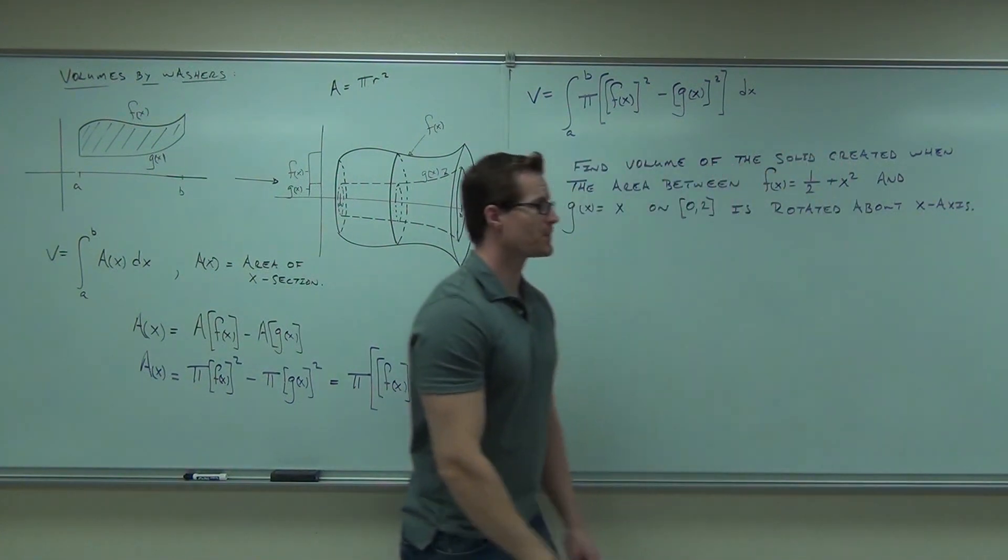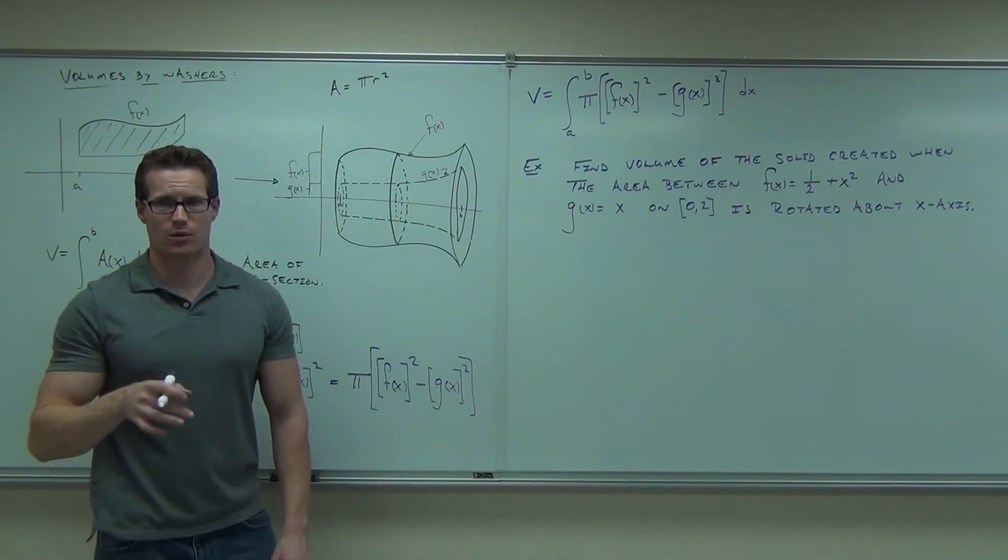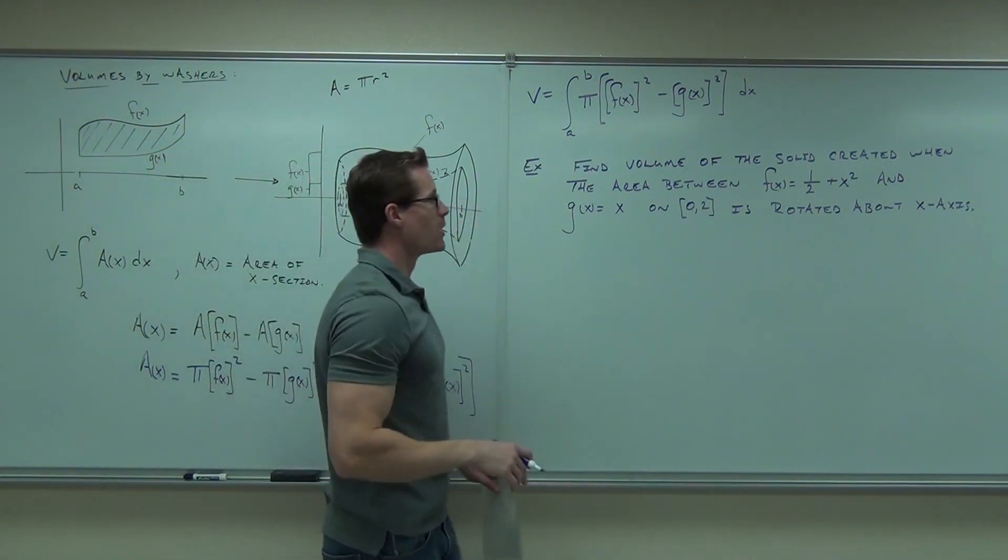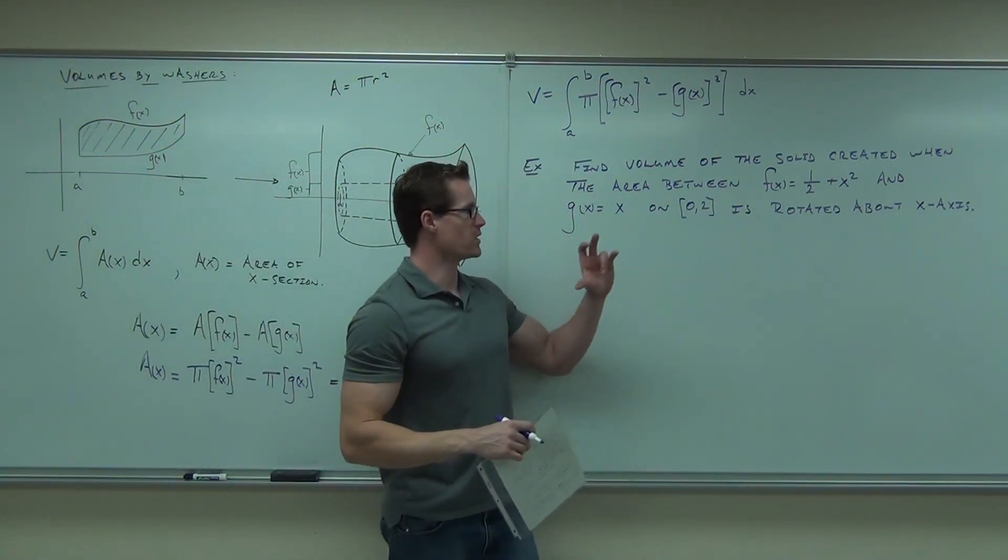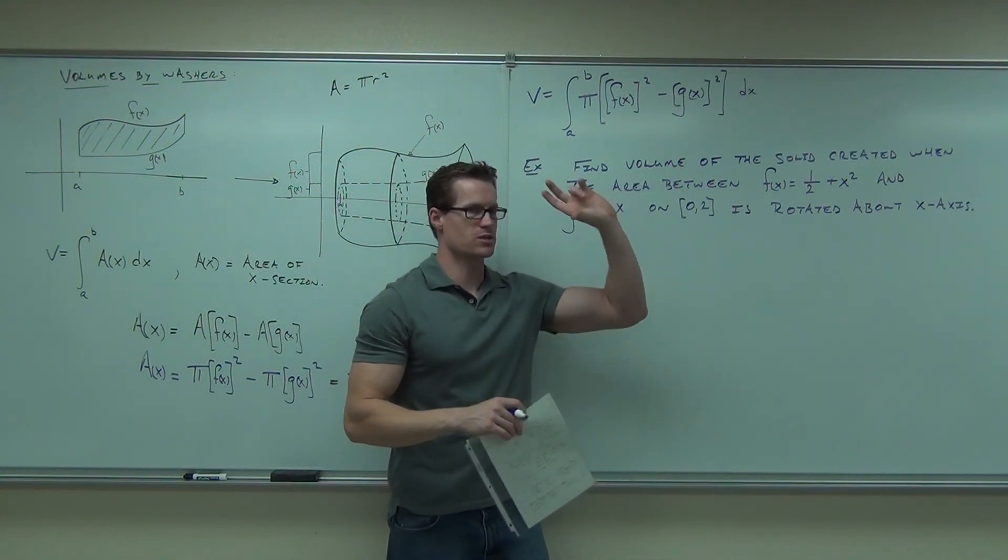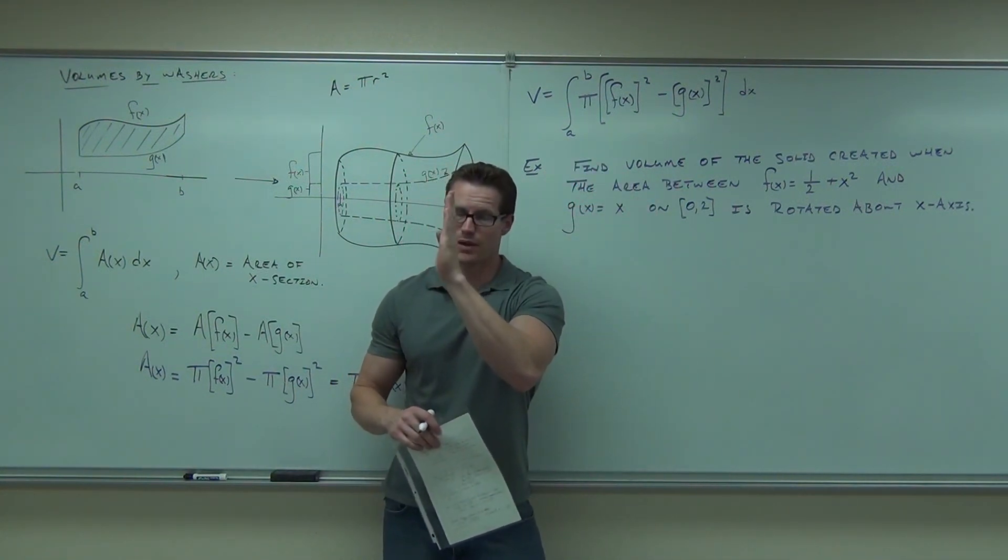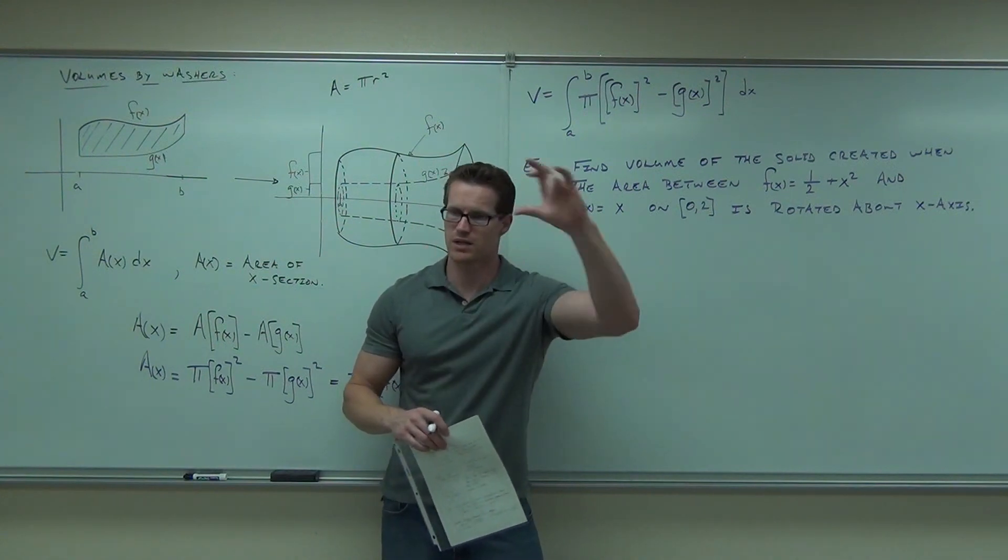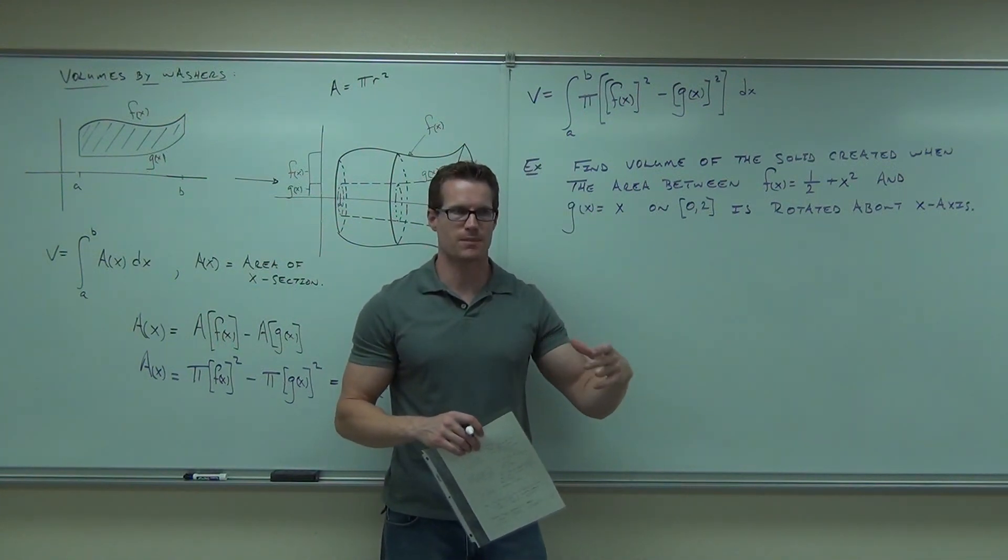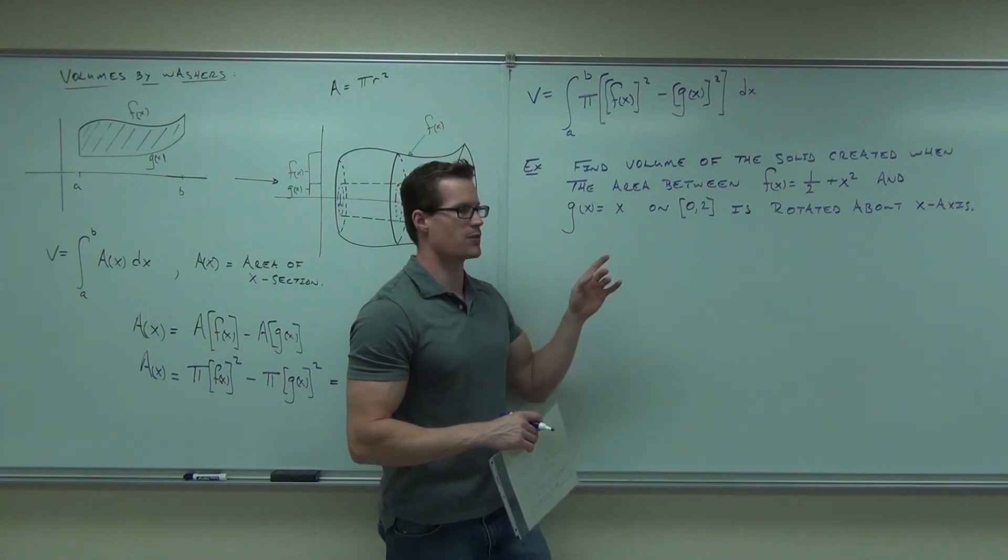Okay, that's very wordy, but I wanted to make sure you understand exactly what we're doing. This is what we're doing. We're trying to find the volume of the solid that's created when the area between two functions, f of x and g of x in this case, on the interval 0 to 2 is rotated around the x-axis. That's the whole idea. Now, we should be able to set this thing up and find the volume of that.